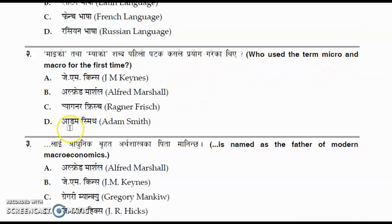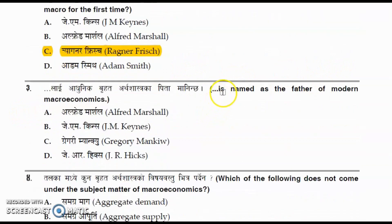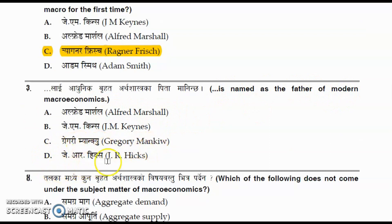Question number two: who used the term 'micro' and 'macro' for the first time? The correct answer is option C, Ragnar Frisch. Question number three: who is named as the father of modern macroeconomics? The options are Alfred Marshall, J.M. Keynes, Gregory Mankiw, and J.R. Hicks. The correct one is option B.